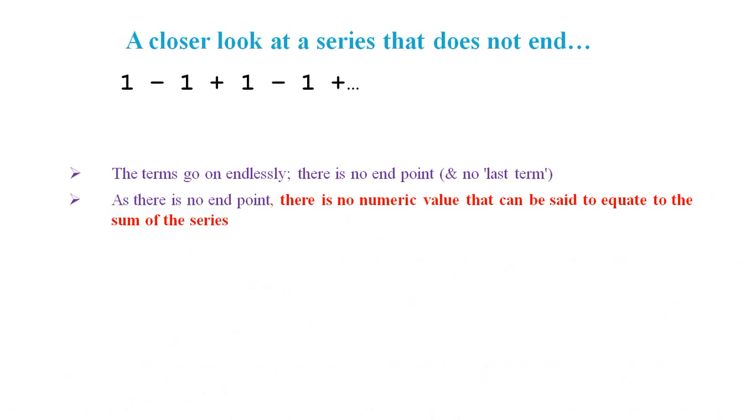Now let's examine a series that does not end in a bit more detail. Here we've got 1 minus 1 plus 1 minus 1 and so on. The terms go on endlessly. There is no endpoint, which means there is no last term. As there is no endpoint, there is no numeric value that can be said to equate to the sum of the series. There is no sum.